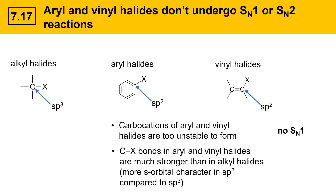Also, the carbon-halogen bond in aryl and vinyl halides is much stronger than in alkyl halides. There's a lot more s-character in an sp2 orbital than there is in an sp3 orbital. More s-character means a shorter, stronger bond. Hence, aryl and vinyl halides have quite strong carbon-halogen bonds and they don't break very easily.